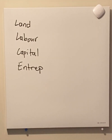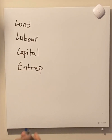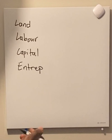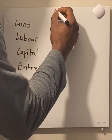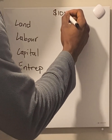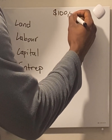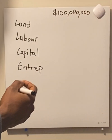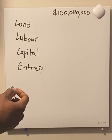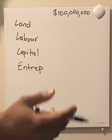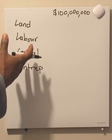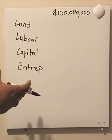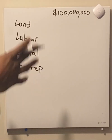Say for instance, income generated based off the product that is put out — say it amounts to 100 million. Based off the functional distribution of income, each of these landowners, or factors of production owners, will get a percentage.